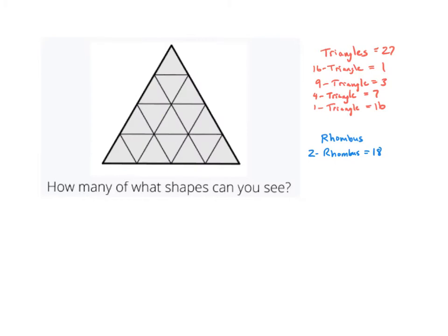There are some larger rhombuses. Here is an example of a larger rhombus — this rhombus has eight triangles in it. Looking in different directions, there's one, and another one, and also one that is vertical. So altogether for the eight-rhombuses we have three of them.